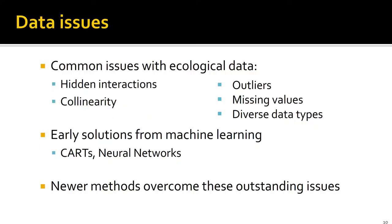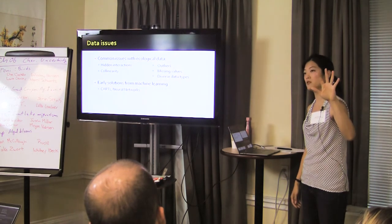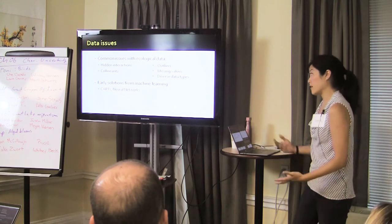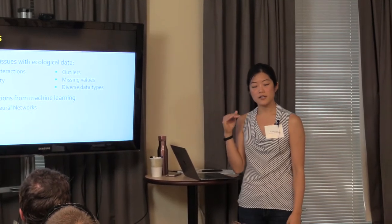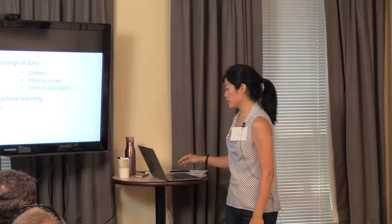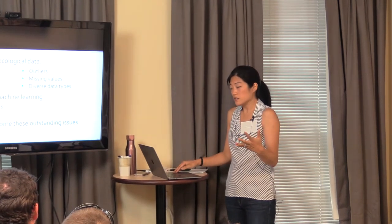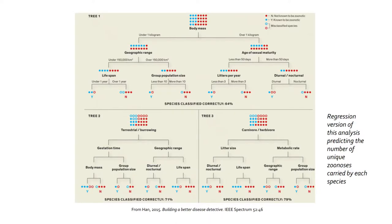Some early solutions include classification and regression trees and neural networks from the machine learning literature. But these have shortcomings: CARTs are sensitive to small perturbations in data early in tree-building — mess with the data and you get a totally different tree. Neural networks work great but have a tendency to overfit, making the model not generalizable to new records. The newer methods overcome these issues, and the one I've worked with most often is boosted regression trees — a combination of two algorithms.